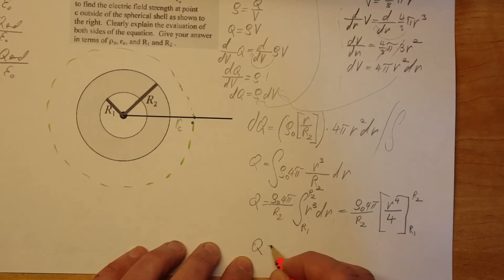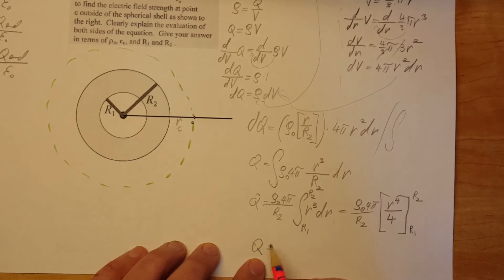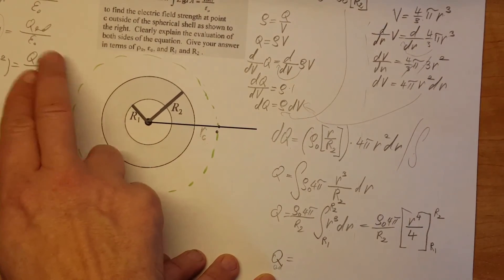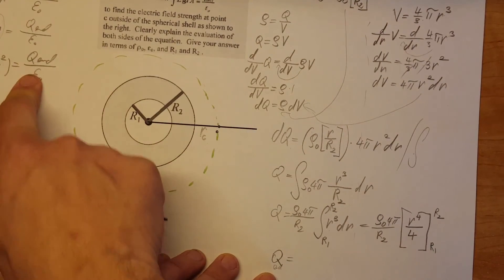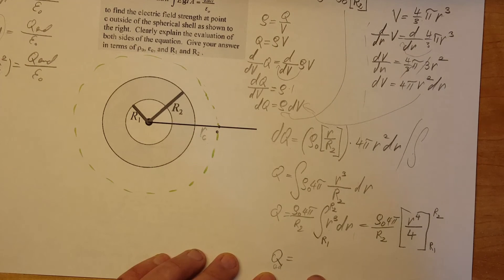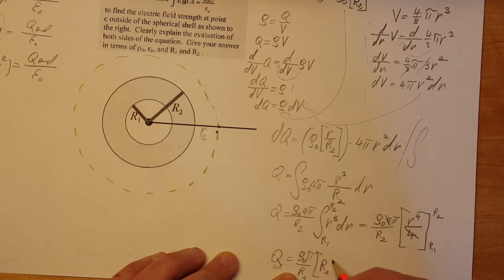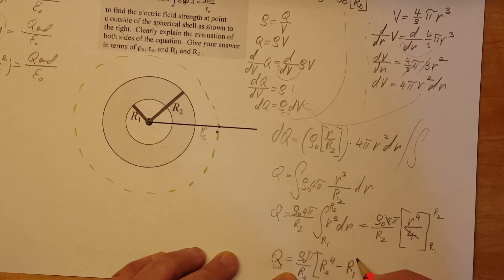Now we're going to have our final form for our Q. Which will be our Q enclosed. That we're going to plug into our Gaussian surface. I mean formula, Gaussian surface formula. So Q. The front stays. Again R4 we can simplify out. Rho 0 pi R2 and R2 to the 4th minus R1 to the 4th. And this is our Q.